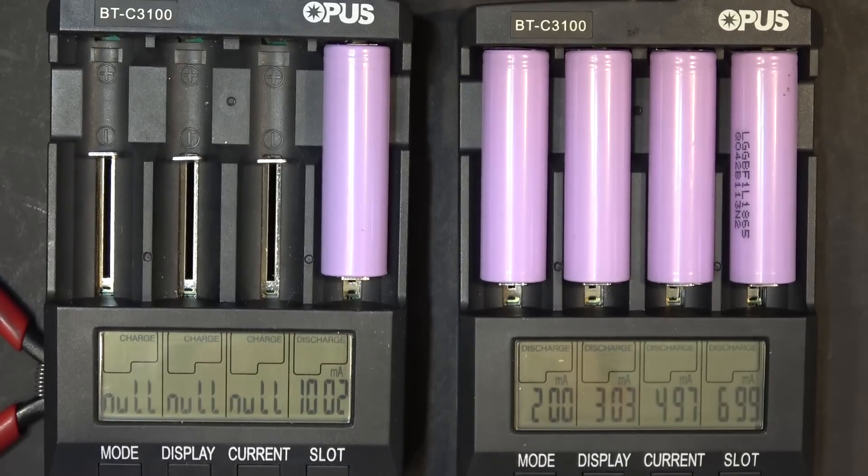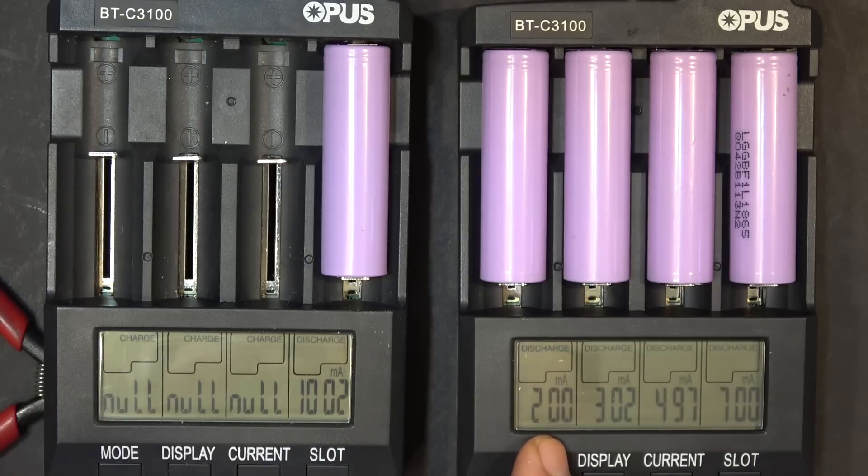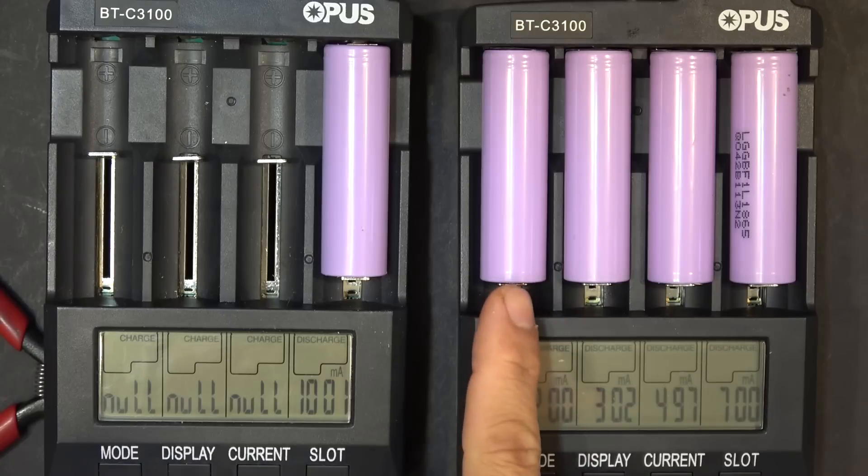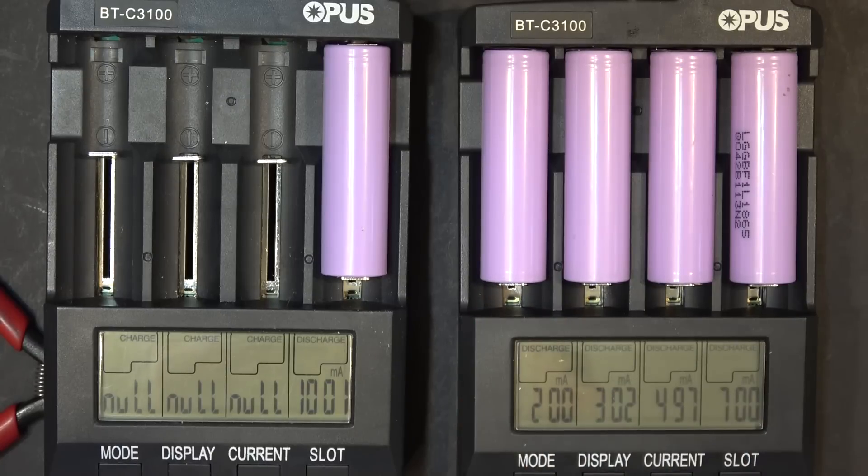Now all we've got to do now is wait for it to complete. This one is going to be done first because it's the highest rate of discharge. This one here is going to be done last. In theory, this is 3350 mAh. At 200 mAh, it's going to take 17 hours for this to be done, if it is 3350 mAh that is. So I'll be right back after it's done.